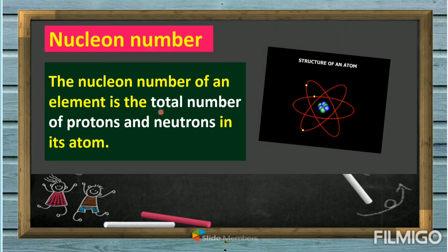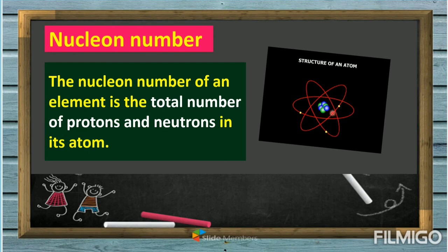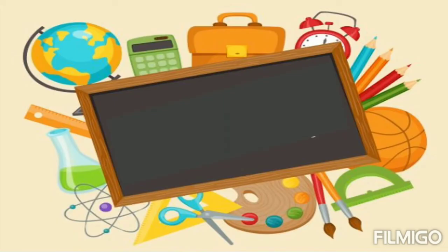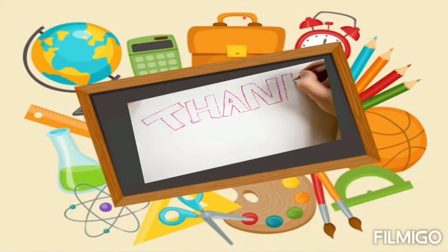The nucleon number of an element is the total number of protons and neutrons in its atom. With three blue particles for protons and three green particles for neutrons, there are six nucleons in total. That's all for today — thank you so much and have a nice day, everybody!